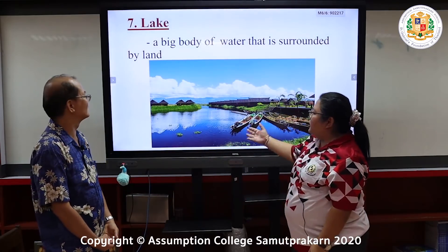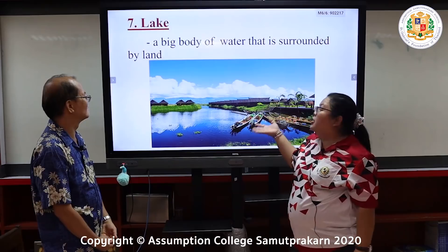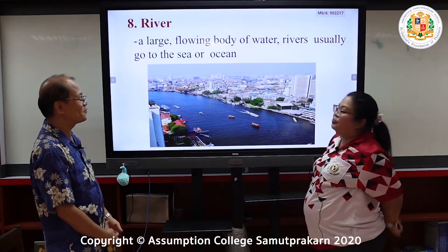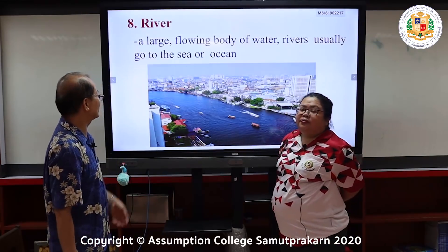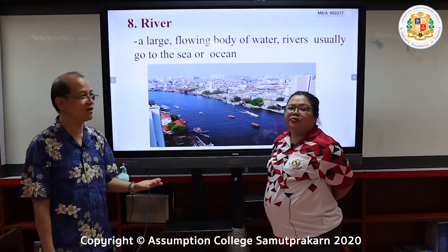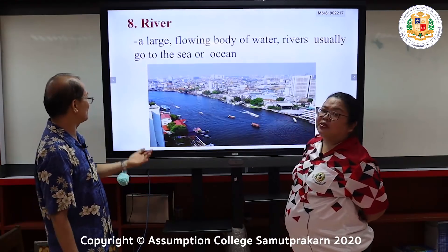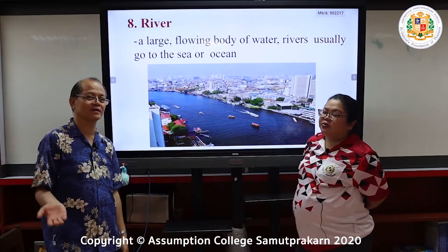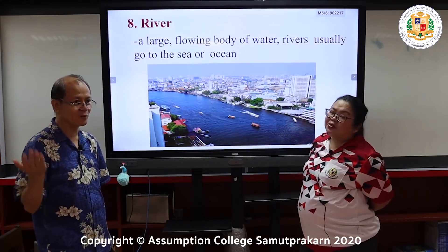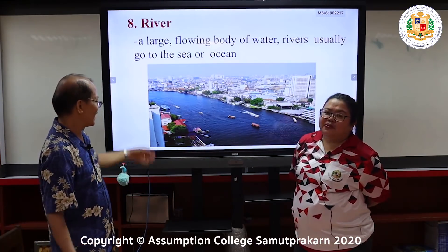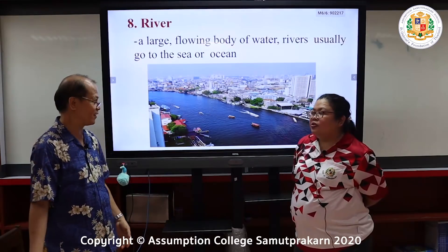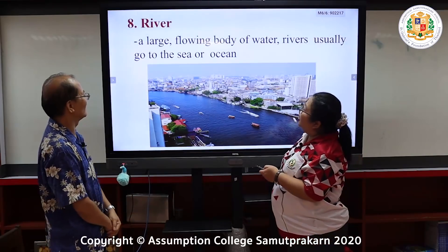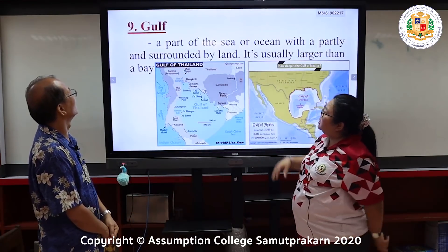A river is a large flowing body of water. Rivers usually flow to the sea or to the ocean. In Thailand, we have one of the famous rivers — they call it the river of the kings — and that is the Chao Phraya River, one of the best examples.